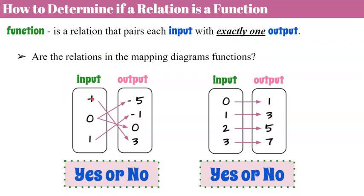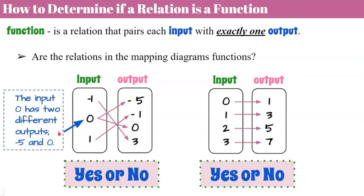A function is a relation that pairs each input with exactly one output. Input negative 1 maps to 3 — it has one specific output. 0 maps to negative 5 and also maps to 0. So because 0 has two different outputs, it fails the function test when we look at the mapping diagram, because it does not have exactly one output. Since input 0 has two different outputs, this is not a function. It's a relation — it shows a relationship — but it is not a function.